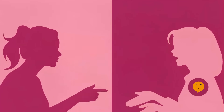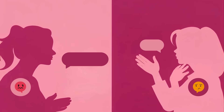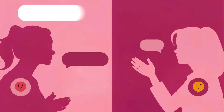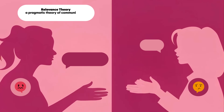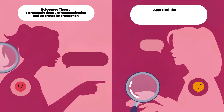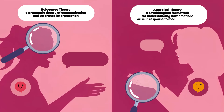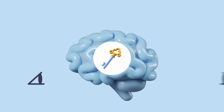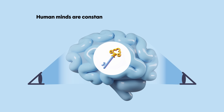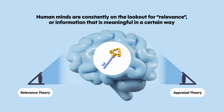At the heart of the project is the goal of uniting two powerful but traditionally separate scientific approaches: on the one hand, relevance theory, a pragmatic theory of communication and utterance interpretation; and on the other, appraisal theory, a psychological framework for understanding how emotions arise in response to meaningful events. Both theories share a key idea that human minds are constantly on the lookout for relevance — information that's meaningful in a certain way — but each theory approaches the idea from a different angle.